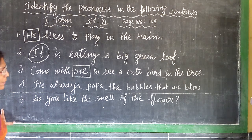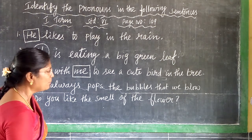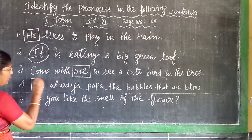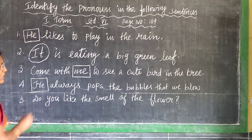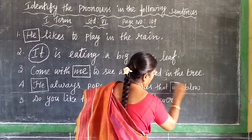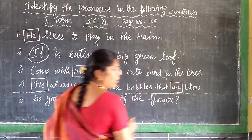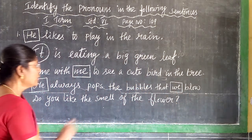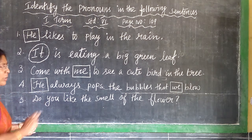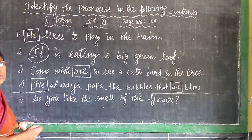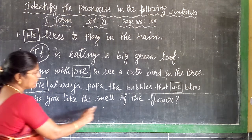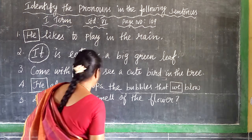He is always pops the bubbles that we blow. So, he is a pronoun — he means 'awan.' We is also a pronoun — we means 'nongal.' There are two pronouns in this sentence.